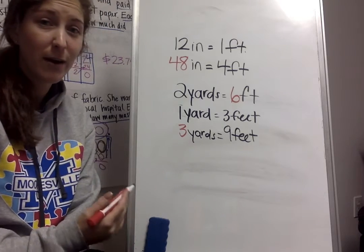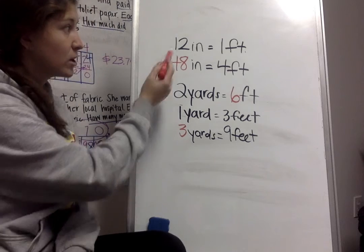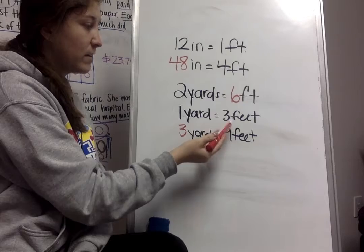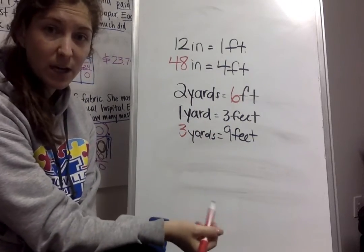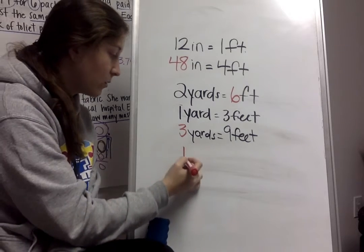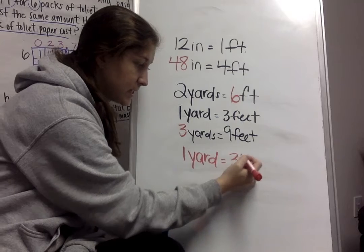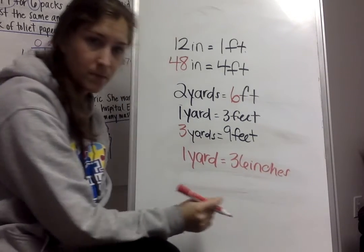I could also figure out how many yards are in a foot. So if I know that there are 12 inches in one foot, and there are three feet in a yard, then I could multiply three times 12, and I would get 36. So in one yard, there's going to be 36 inches.